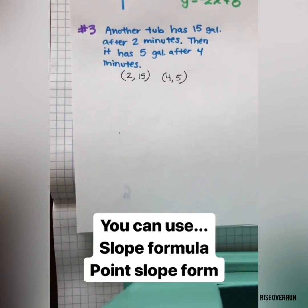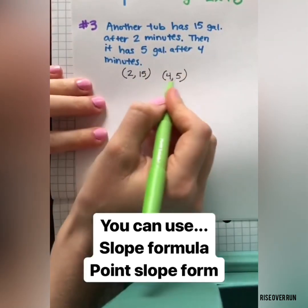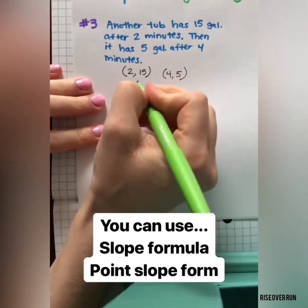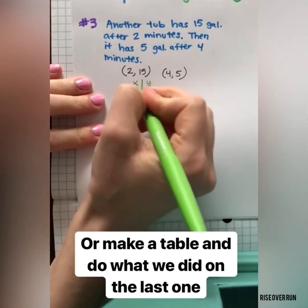If you know the slope formula and point-slope form, those would be useful here. If you don't know those, I'm going to show you another way to keep it simple. Since we already know what to do with a table of values, let's create a table out of these two points.